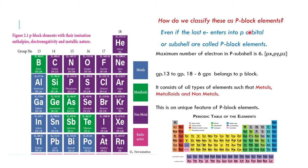How do we classify elements as P block elements? Even if only one single electron enters into a particular orbital, we classify those elements under that category — S block, D block, P block, or F block elements. If the last electron enters into a particular subshell, that element belongs to that block.